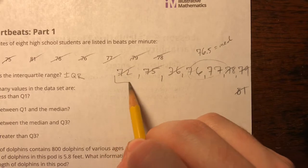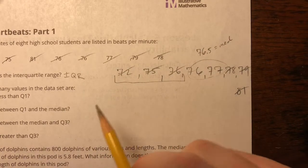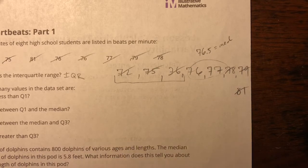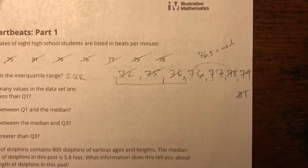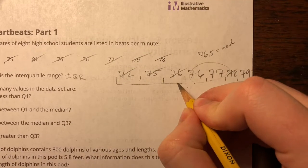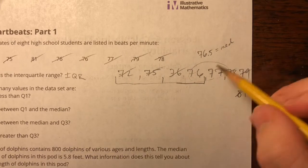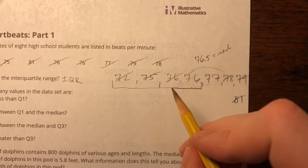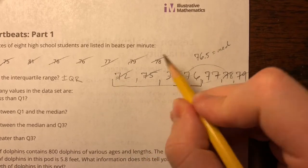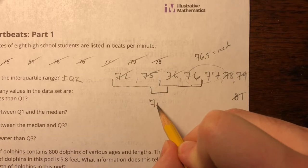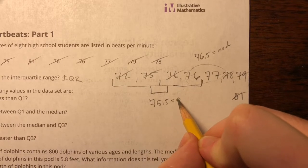All right, now I'm looking at this lower half, and I can see that we're going to have a, well, actually I would probably want to include this value as well, right? The bottom half, right? It's eight values total. So the bottom half is these four numbers. So then the median of the first half is going to be in between 75 and 76, and that'll be 75.5, and that's Q1.